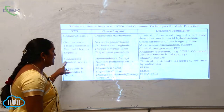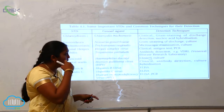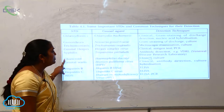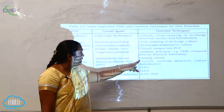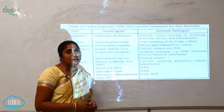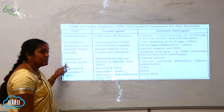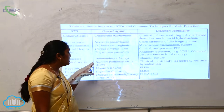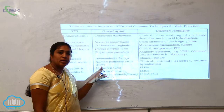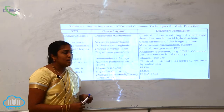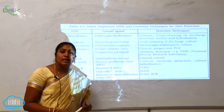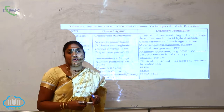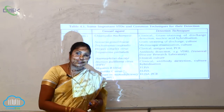Next is chancroid, caused by Haemophilus ducreyi. Detection involves clinical examination and culture collection. Genital warts, caused by Human Papillomavirus (HPV), are also sexually transmitted. Detection involves clinical examination, antibody detection, and culture hybridization techniques.